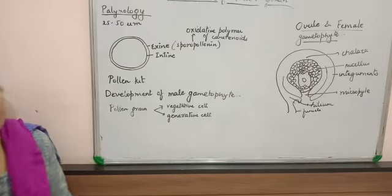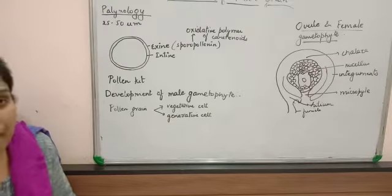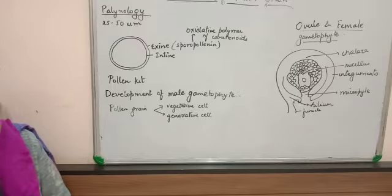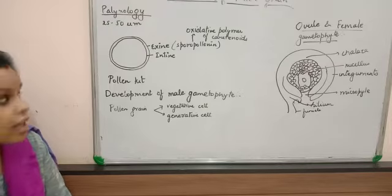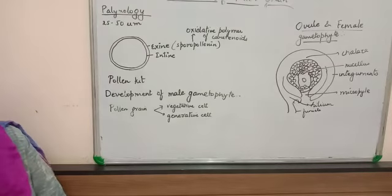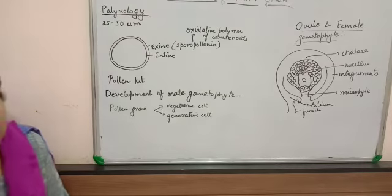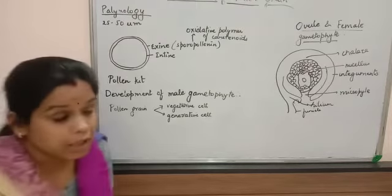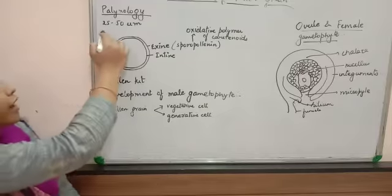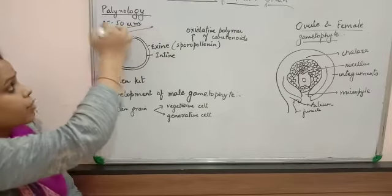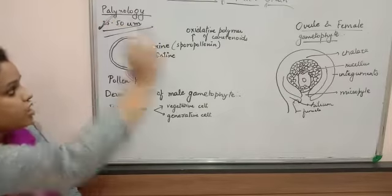If we talk about the dimensions of the pollen grains — what is its diameter? It is about 25 to 50 micrometers, which is very small.